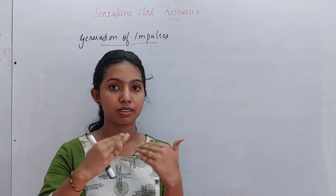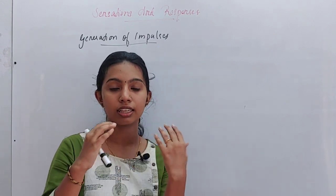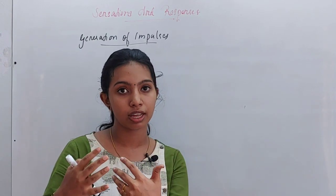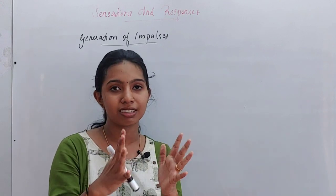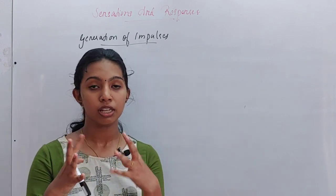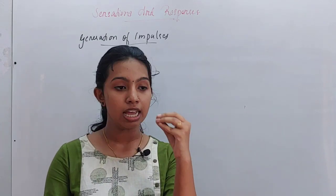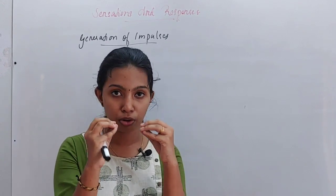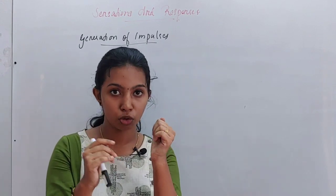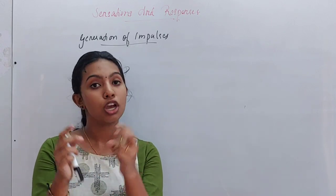The impulse is transmitted by a neuron. We are talking about how the impulse is transmitted between two neurons. Suppose this is a neuron — this synaptic knob is connected to the adjacent neuron. It is connected to the dendrite. This is a synaptic knob, which is the junction between two neurons.